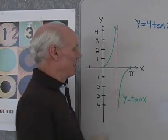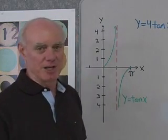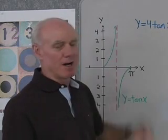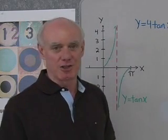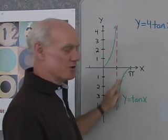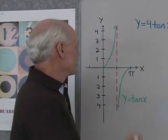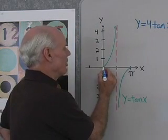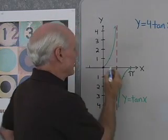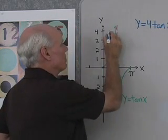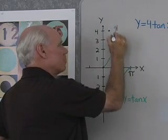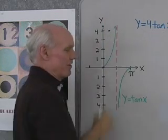Similarly, tangent of 3pi/4 is going to be negative 1. So if this is the graph of y = tan(x), what does y = 4 tan(x) look like? Well, that 4 is just going to multiply every one of these y-values by 4. So where the graph was 0, it's still going to be 0 because 4 times 0 is 0. Where the graph was 1, now it's going to be 4, and as this goes up, each of these values is also going to be multiplied by 4.